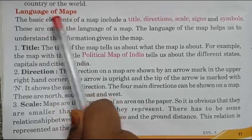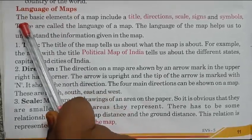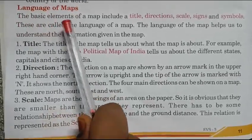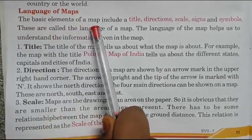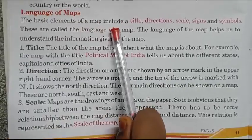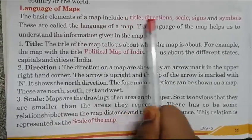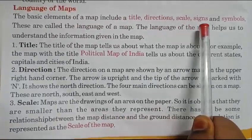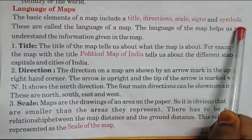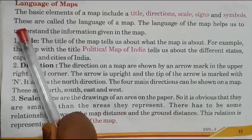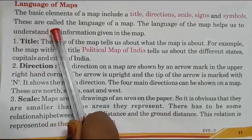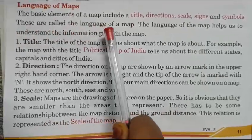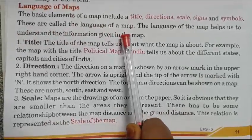Languages of maps. The basic elements of a map include a title, direction, scale, and signs and symbols. These are called the language of a map.